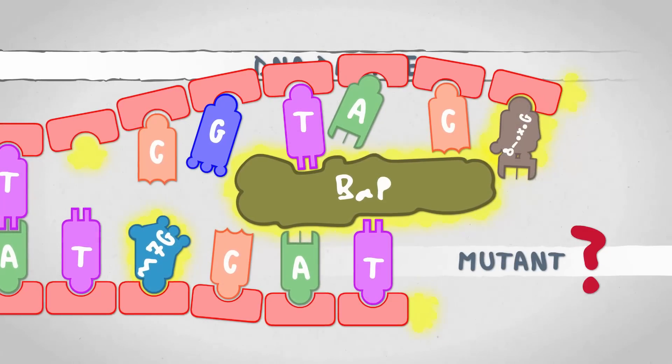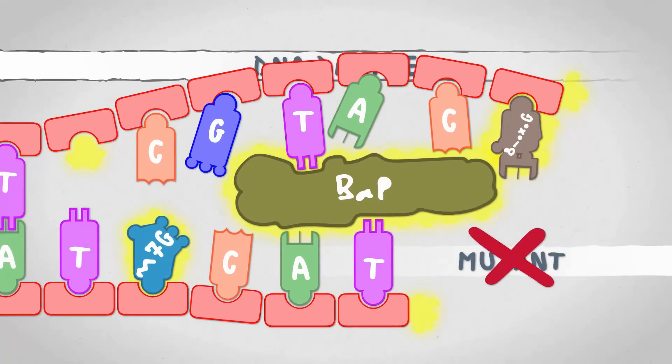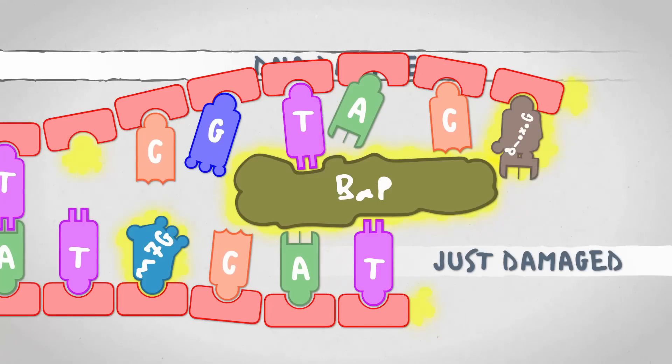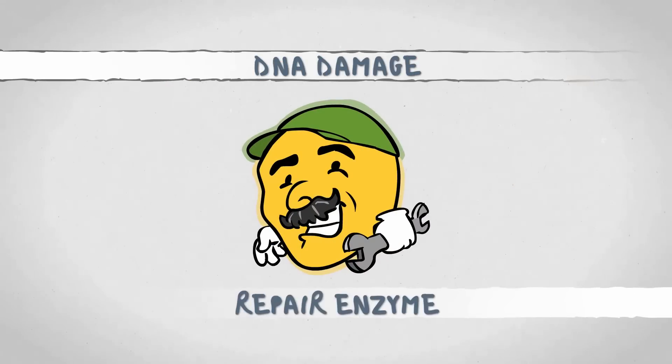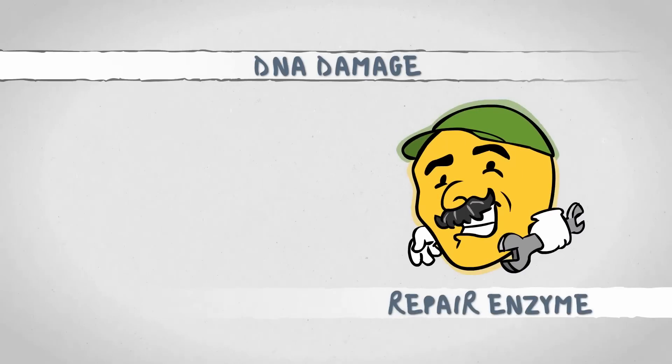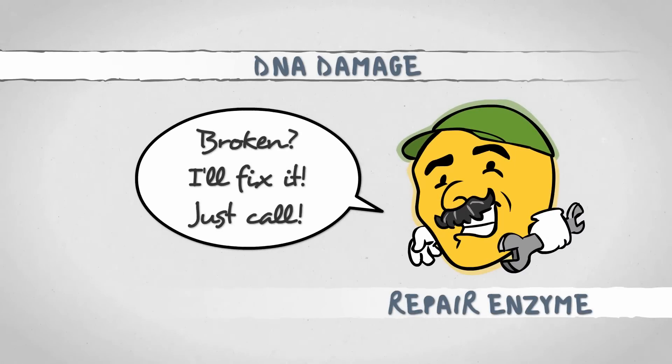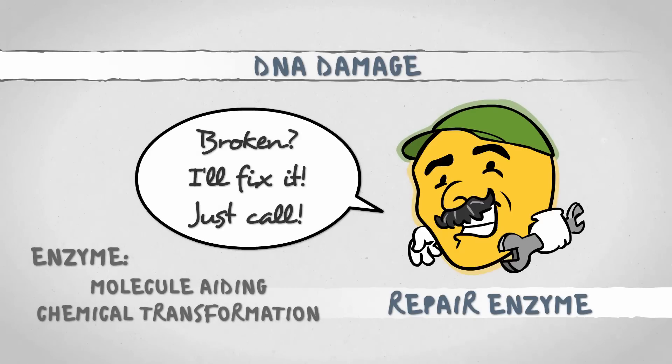Is this mutant DNA? Nope. It's just damaged DNA. But mutation may follow. Inside the cell, we will find many repair enzymes which are most of the time able to fix broken DNA. As a side note, enzymes are molecules which help certain chemical transformations happen. Our bodies are full of various enzymes.